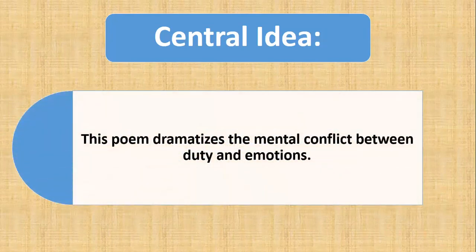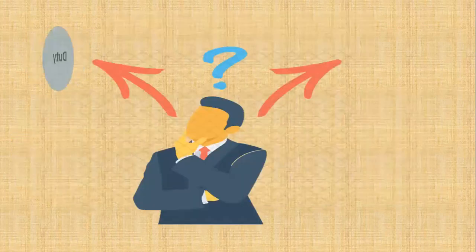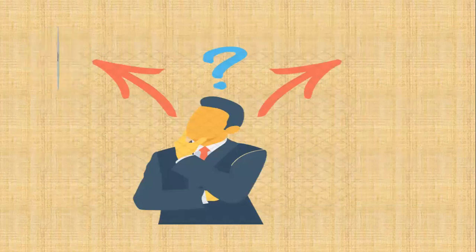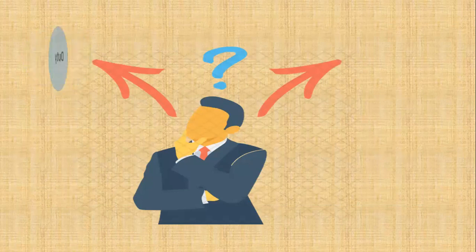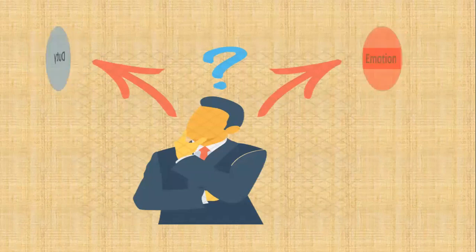This poem dramatizes the mental conflict between duty and emotions. Let me give an example: if my son is appearing in an examination and I'm the invigilator in the same classroom, suppose I saw him cheating. Now in such a case, my duty as invigilator urges me to expel him out of the class because I saw him cheating. But at the same time, my emotion does not let me do so. After all, how can I expel my son and spoil his future?